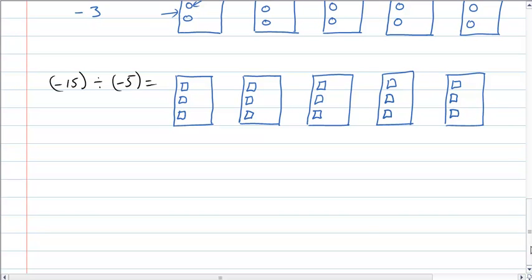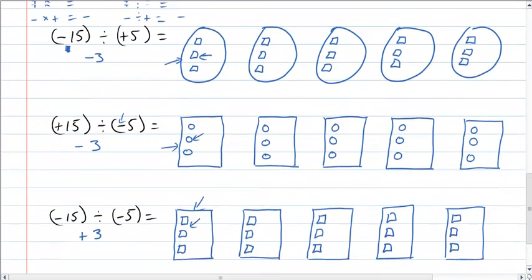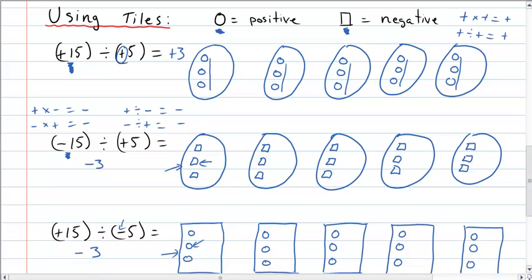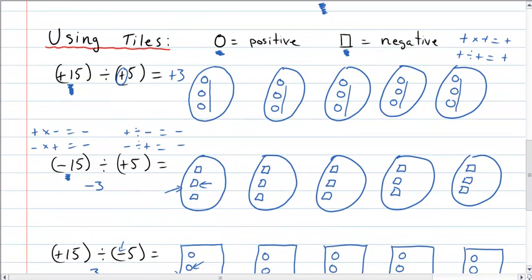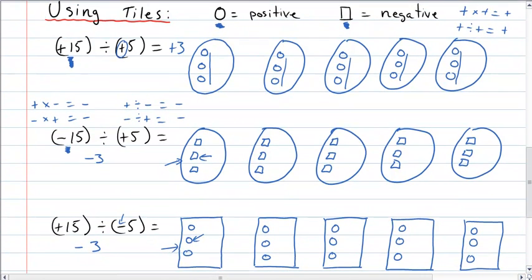And now, I have 15 in there. I have negative on the outside, negative on the inside. Negative times a negative, or negative divided by a negative, equals positive. So my answer is positive 3. It may not be perfect, but it's a visual way that I can understand it easy enough. And that's how you model the division of integers using tiles.